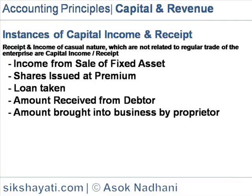Instances of capital income and receipt: receipts and income of a casual nature which are not related to regular trade of the enterprise or capital income receipt. Income from sale of fixed assets — an old motor car of book value Rs. 25,000 sold at Rs. 40,000. Profit on sale of a motor vehicle, i.e., a fixed asset, is not a regular activity; hence the profit of Rs. 40,000 minus Rs. 25,000, i.e., Rs. 15,000, is a capital profit.